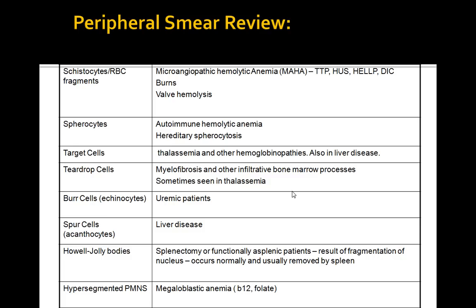WBC findings can also be helpful. Hypersegmented neutrophils narrow your differential to B12 and folate deficiency. Toxic granules — coarse, dark, and blue — and Döhle bodies, which are blue patches of dilated endoplasmic reticulum, can narrow your differential to sepsis or severe inflammation.